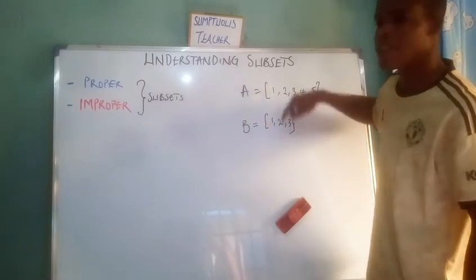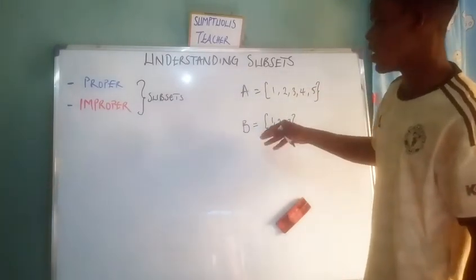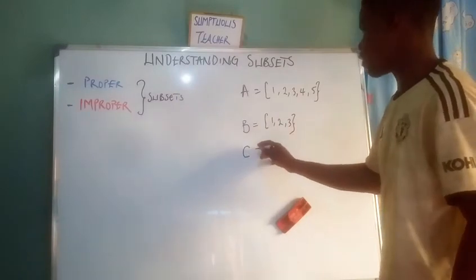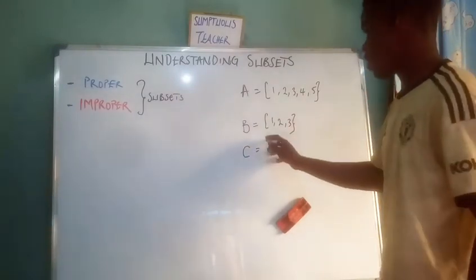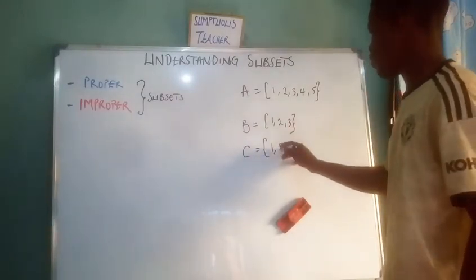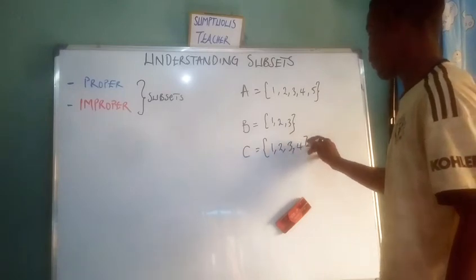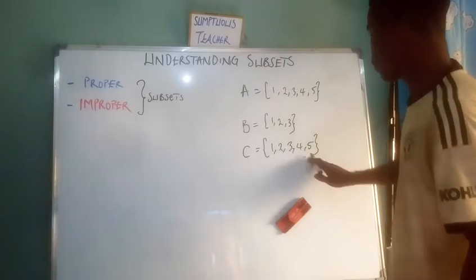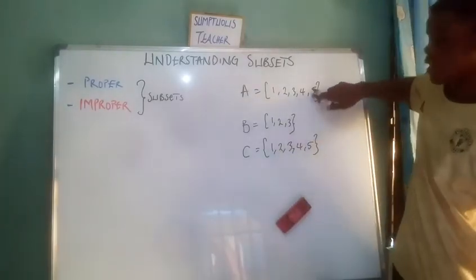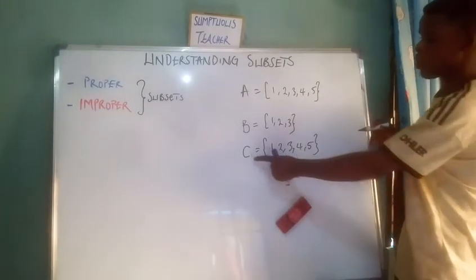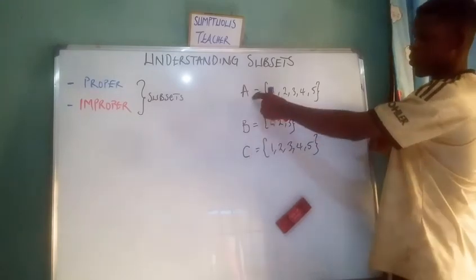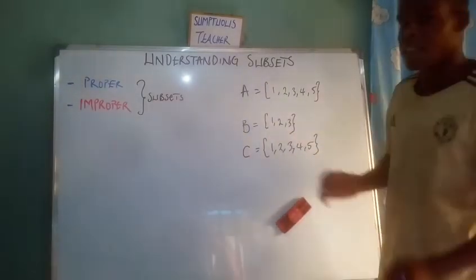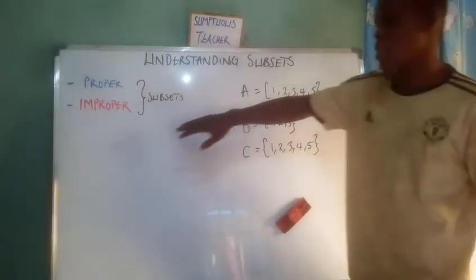For example, if B consists of {1, 2, 3}, then B is a subset of A. We can also have another set C which consists of {1, 2, 3, 4, 5} — the same elements as A. We can call both B and C subsets of A.